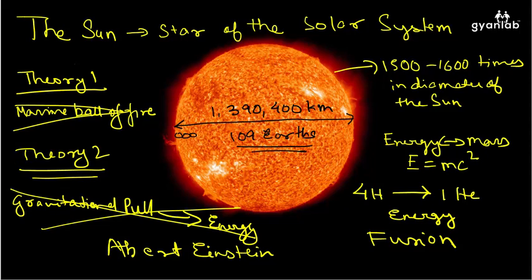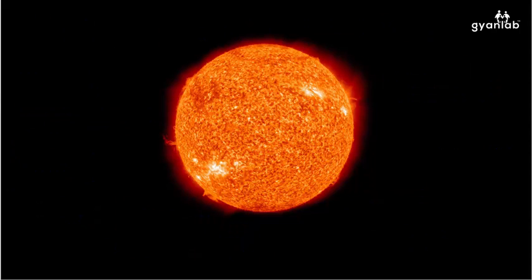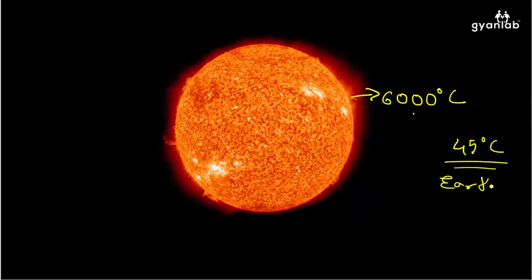If you were to now see the temperature that's at the Sun's surface, the Sun's surface has a temperature of about 6000 degrees centigrade. When you compare that to a 45 degree centigrade really hot day on Earth, you realize how hot 6000 degrees centigrade is.